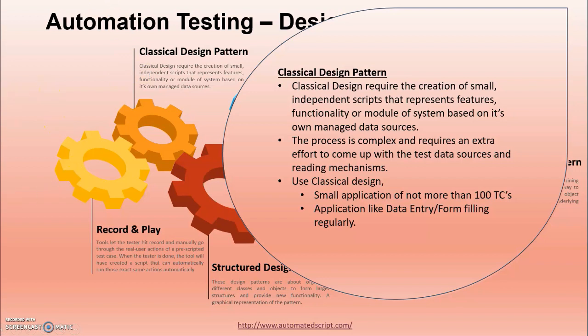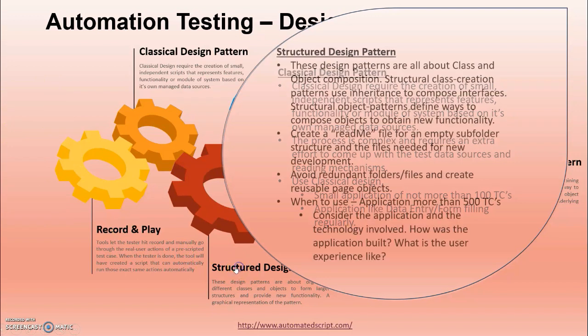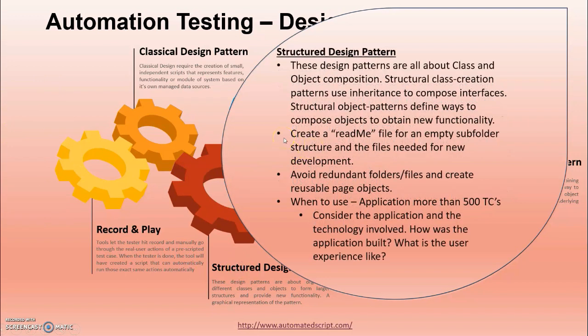The structural design pattern is all about class and object composition. Structural class creation patterns use inheritance to compose interfaces, while structural object patterns define ways to compose objects to obtain new functionality. They separate implementation and abstraction through their own classes. The advantage is it helps you avoid coupling and achieve decoupling, making object relationships that build a large system without disturbing existing implementation.